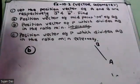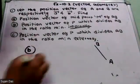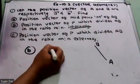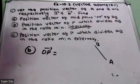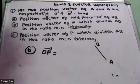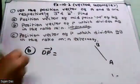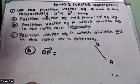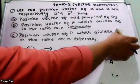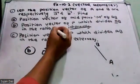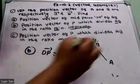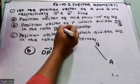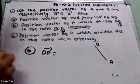So P divides AB internally in the ratio M to N. A will have M and N. B becomes N.